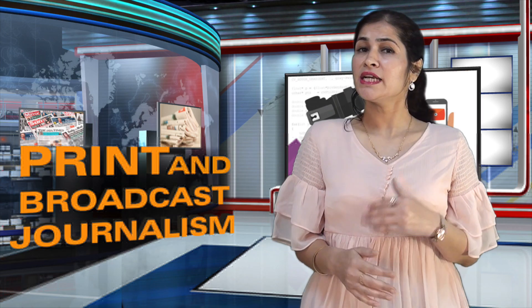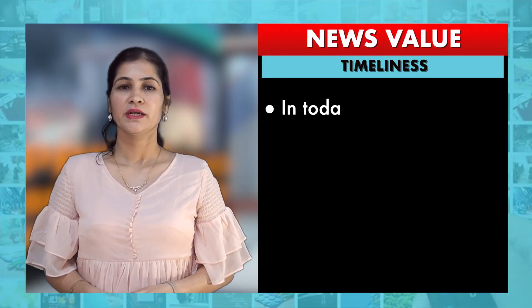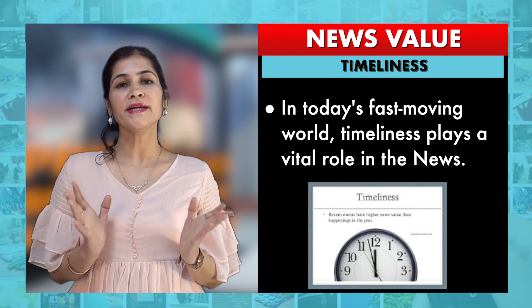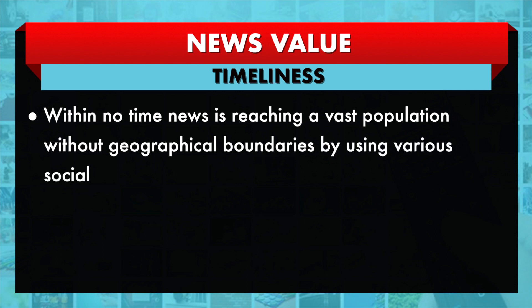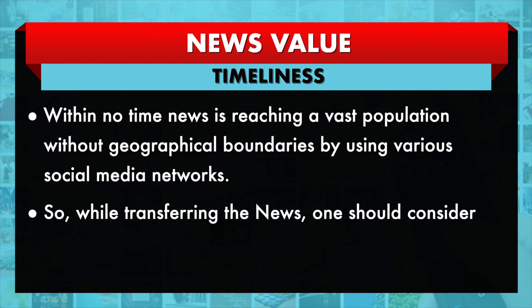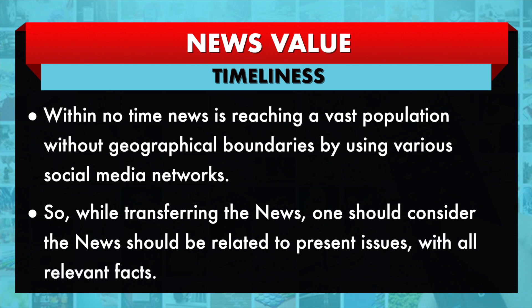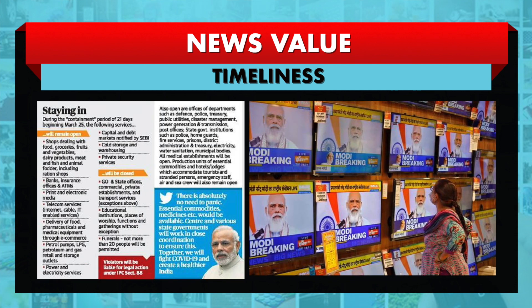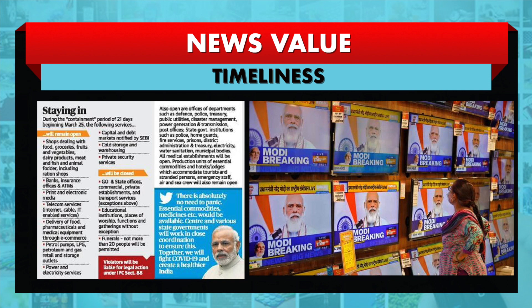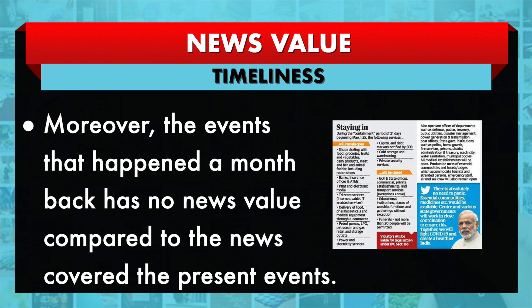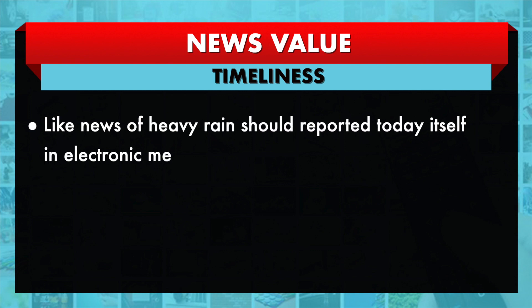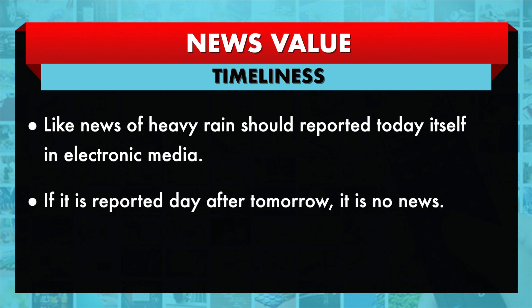The first news value, often exploited by publicists, is timeliness. In today's fast-moving world, timeliness plays a vital role in the news. Within no time, news is reaching a vast population without geographical boundaries using various social media networks. While transferring the news, one should ensure the news is related to present issues with all relevant facts. For example, the national address given by the Prime Minister of India on COVID-19 has to be reported in the first edition of the newspaper and broadcast live in electronic media. Events that happened a month back have no news value compared to news covering present events. News of heavy rain should be reported today in electronic media — if reported the day after tomorrow, it is no news.